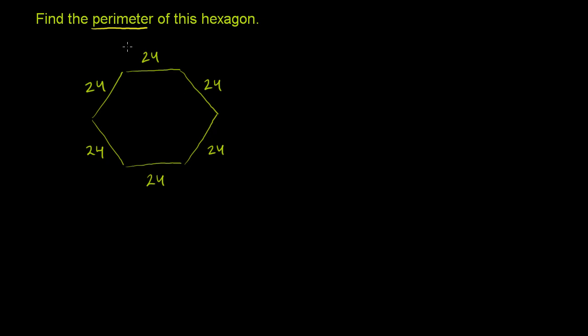So to find the perimeter, we just need to find the distance around the hexagon, which is going to be the sum of all of the lengths of the sides. So the perimeter is going to be 24. How many of these do we have? We have one, two, three, four, five, six 24s, which makes sense because the hexagon has six sides.